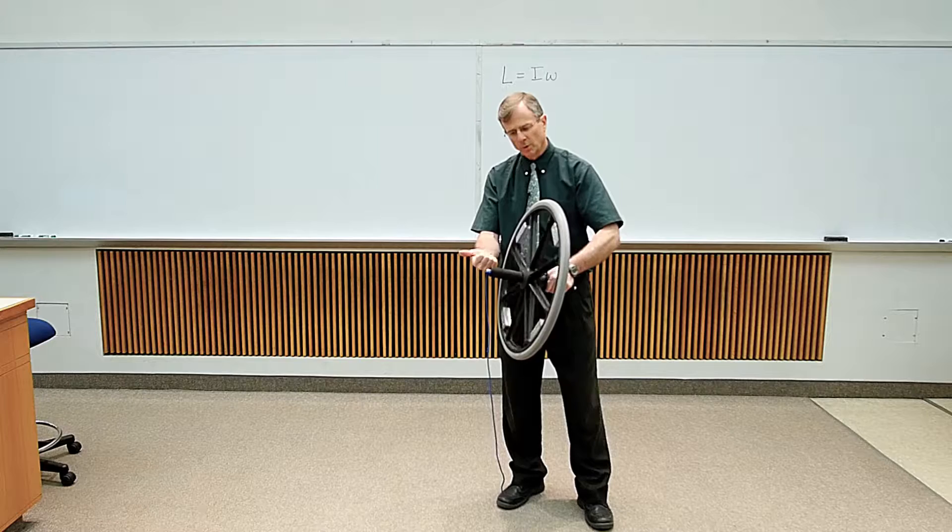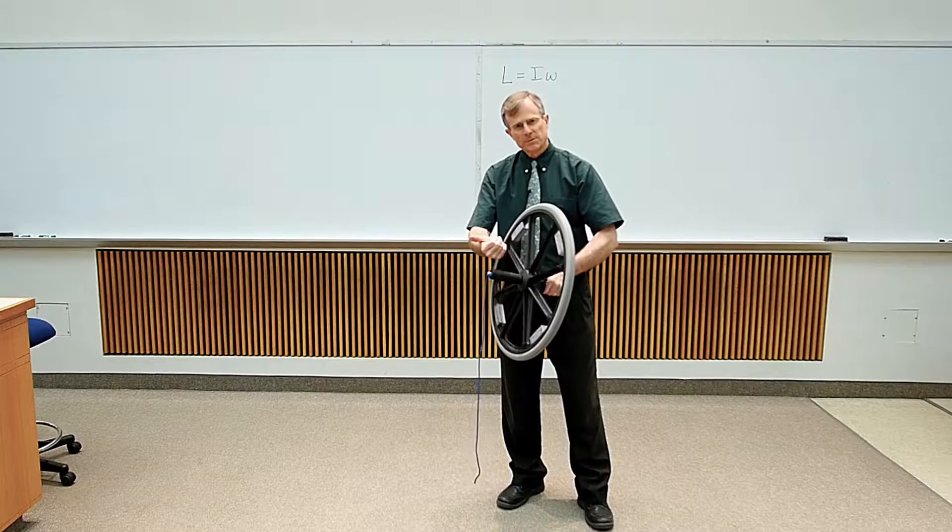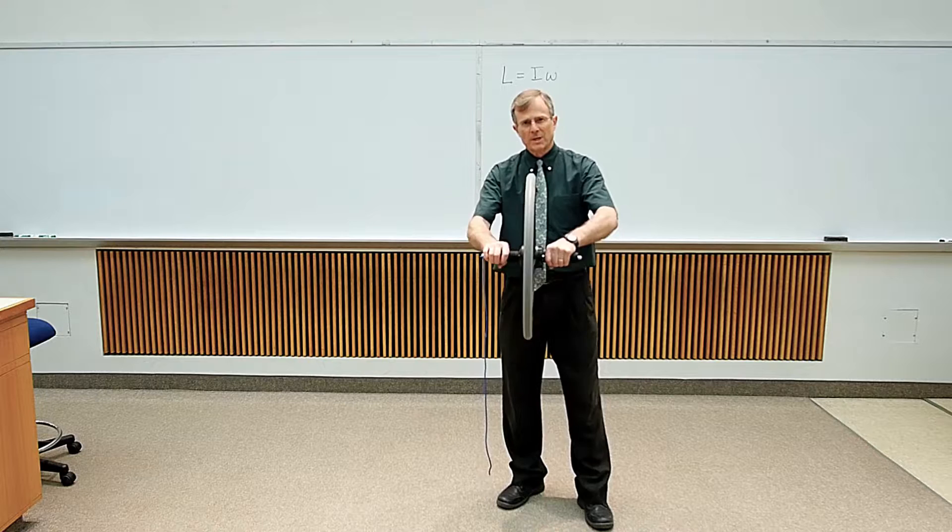which can be determined by the right-hand rule. You curl your fingers in the direction of the rotation, and your thumb gives the direction of the angular velocity.